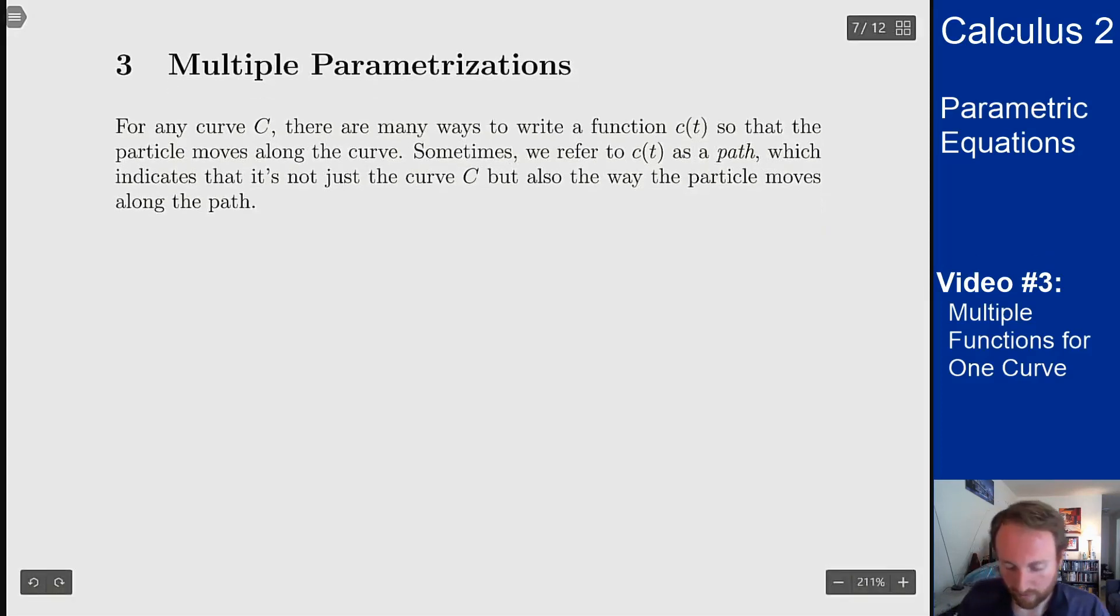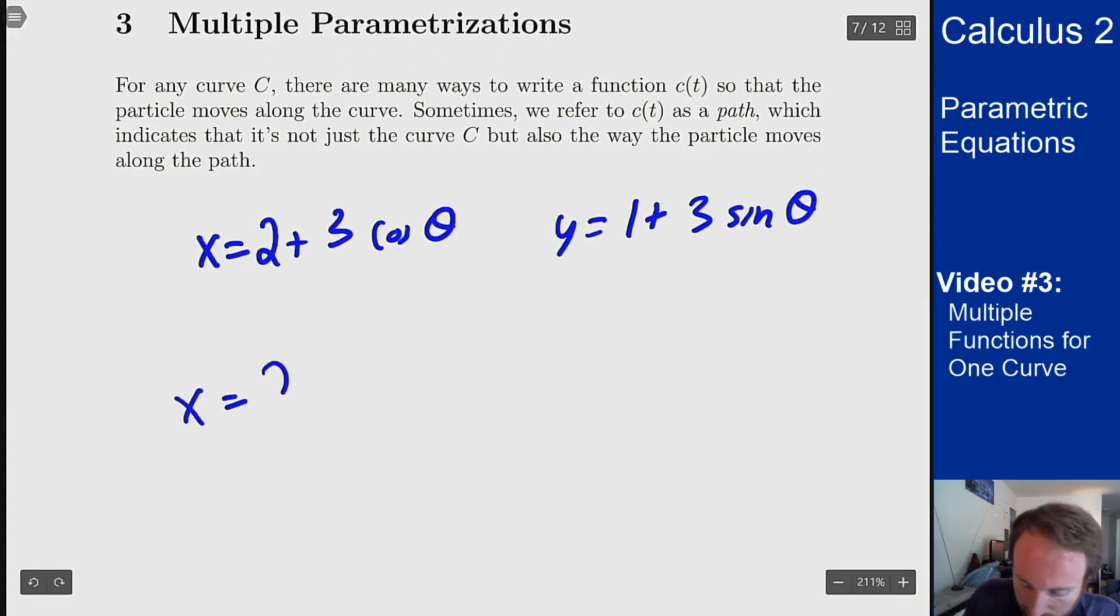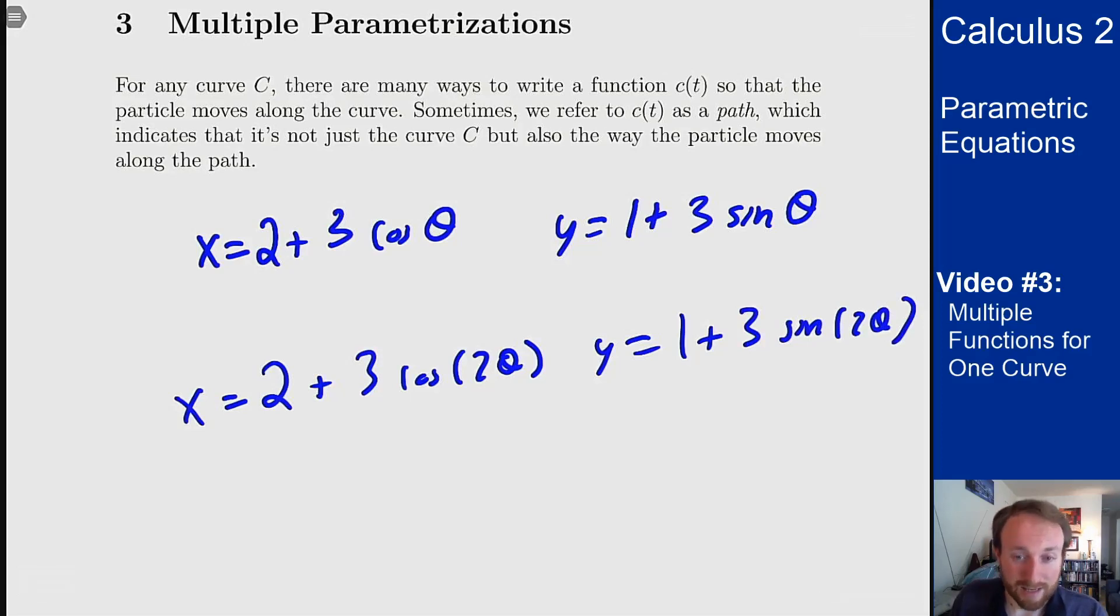If we look at a circle from before, this traces out the circle with radius 3 centered at a point. Now what if I look at x = 2 + 3 cos(2θ) and y = 1 + 3 sin(2θ)? Well, this traces out the exact same curve.